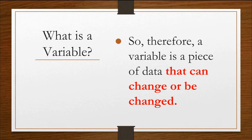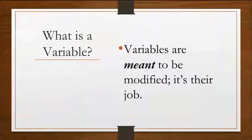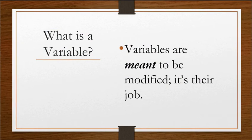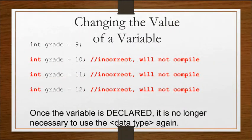So therefore, a variable is a piece of data that can change or be changed. Variables are meant to be modified. That's their job. And in your code, you're going to be creating variables and changing their values constantly. So let's look at an example of trying to change a variable's value. Let's say we have int grade equals 9. On that line, grade is declared by putting the data type int in front of grade and initialized by setting it equal to 9.